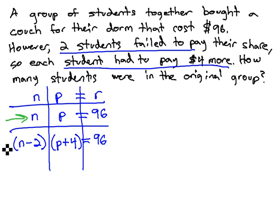And then we can use both of these rows to come up with our two equations, that n times p equals 96, and n minus 2 times p plus 4 is also equal to 96.